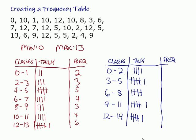So now let's count up those frequencies. We've got 4 that go from 0 to 2. Then we've got 6 that go from 3 to 5. 5 that go from 6 to 8. 6 that go from 9 to 11. And 6 that go from 12 to 14.